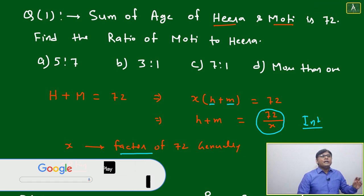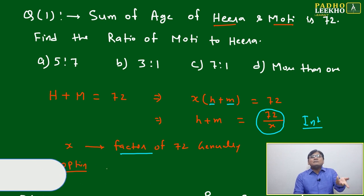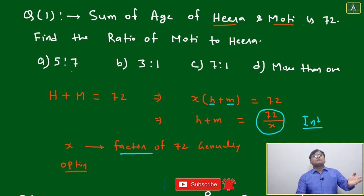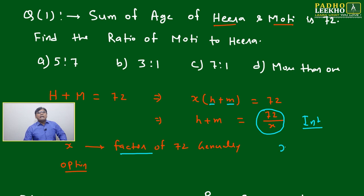If X is any factor of 72, then it will be divisible by X. We can check the options. For example, 5 + 7 = 12, and 72/12 = 6, so the ratio 5:7 works.